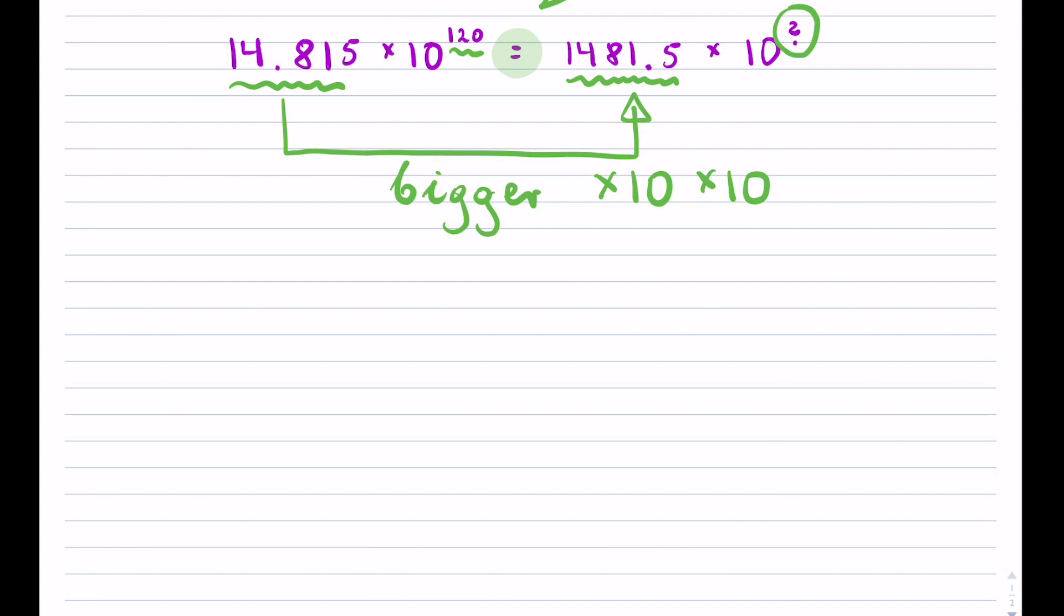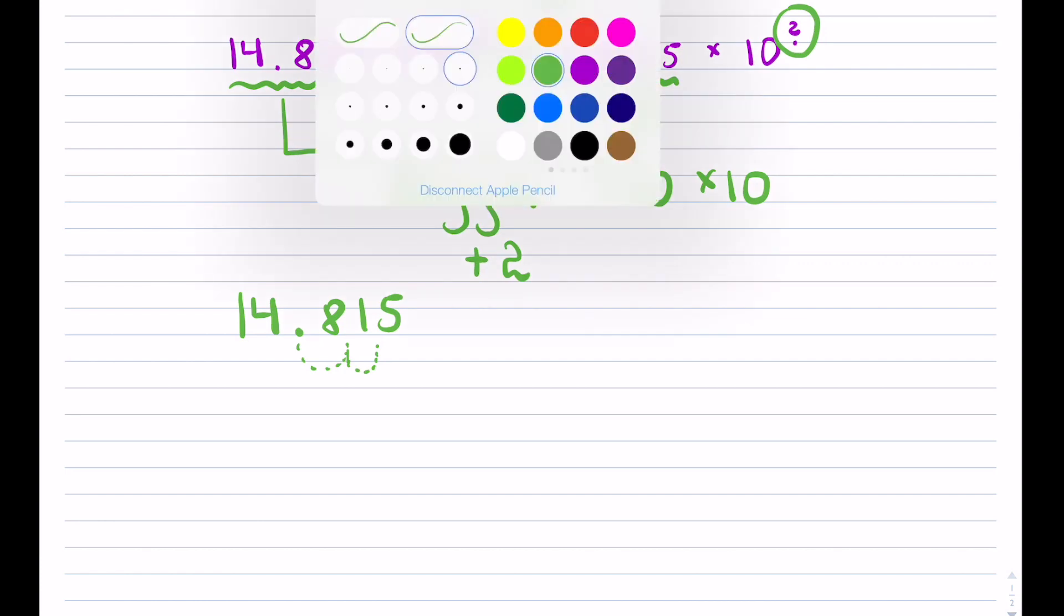So I like to write, it got bigger by 2 or much simpler. The decimal has shifted two places, which is really just multiplication or division. In this case, multiplication by 10.